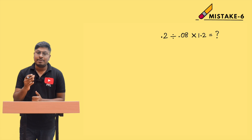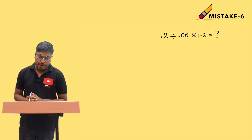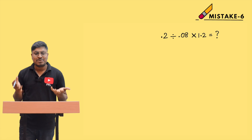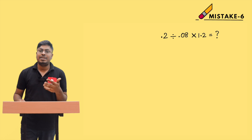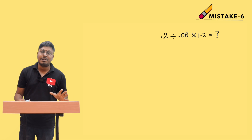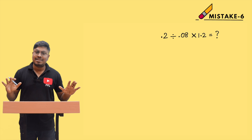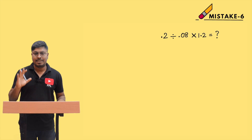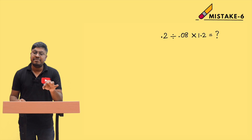This is mistake series video number 6, on the topic of simplification. Here is the question: 0.2 ÷ 0.08 × 1.2 = ? By just seeing this question, many students will make a mistake because of the decimal point. Even in multiplication, addition, or division with decimals, mistakes are very common. The best way to avoid them is by removing the decimal point first.